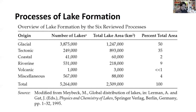The second origin listed in the table is tectonic. Most larger and deeper lakes form due to plate tectonic processes, in particular the process of rifting, where continents or land masses are pulled apart, causing the land surface to drop down and form basins or depressions. We also have a number of other processes: coastal origin, riverine, fluvial, volcanic, and miscellaneous — although these are really not as abundant or important as glacial or tectonic lakes.